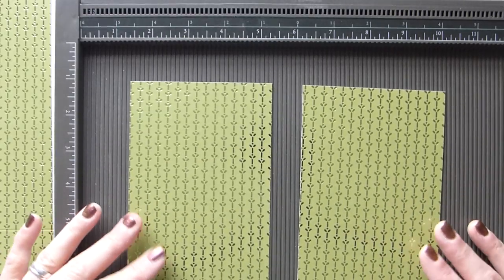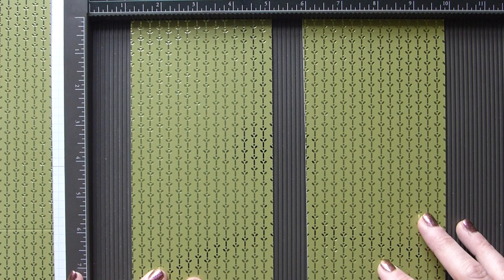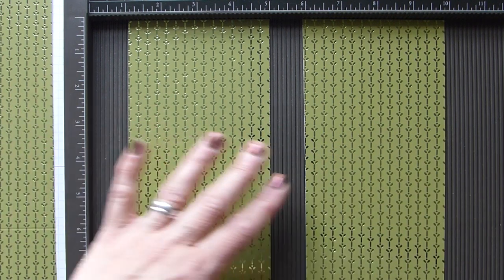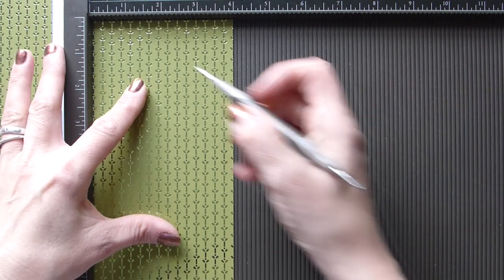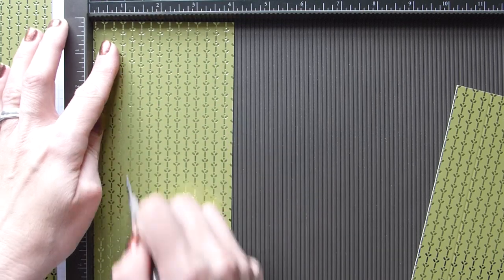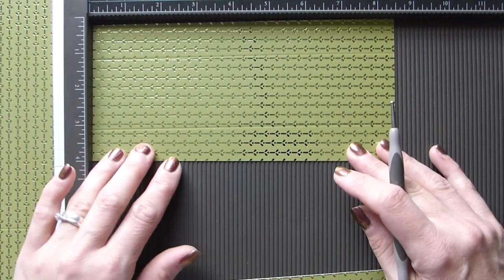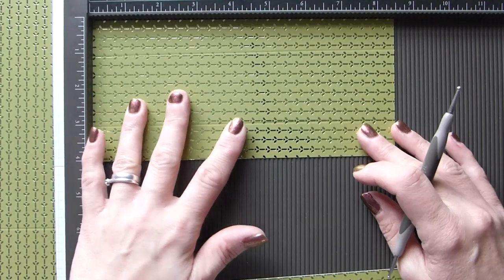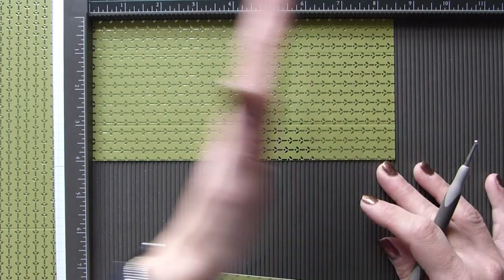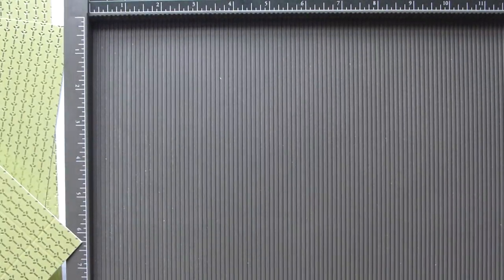You then need two pieces that are going to be your sides. These measure 8.5 by 4 inches—that's 21.5 by 10.5 centimeters. Make sure your pattern is running the correct way. On the short side, on both pieces, we're going to score at 1 and 3 inches, which is 2.5 and 7.5 centimeters. Then with your pattern running from right to left this time, we're going to score at 7 and a half, which is 19 centimeters. Pop that to one side.